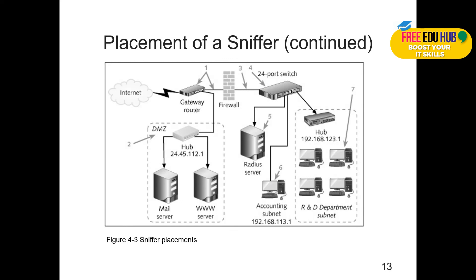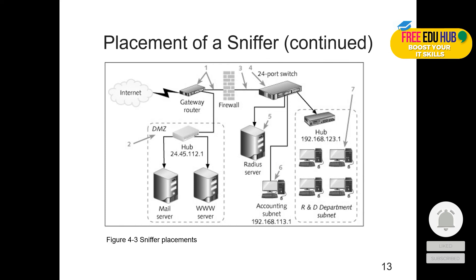The question is how a sniffer gets placed if no one has physical access to the network. If one machine is compromised, what attackers do is send a Trojan horse. Once the Trojan is in place on a computer, it opens a port to communicate on the network, allowing the sniffer to send packets that are captured for later use. We'll continue this in our next session. See you soon.